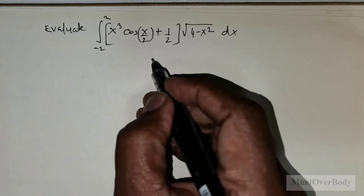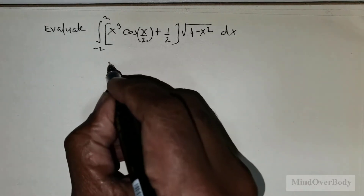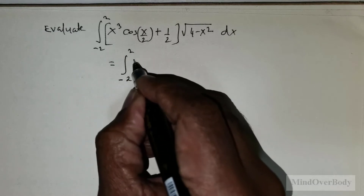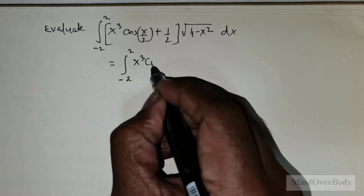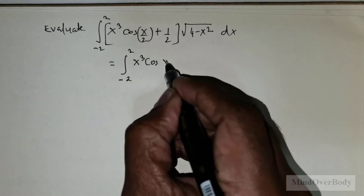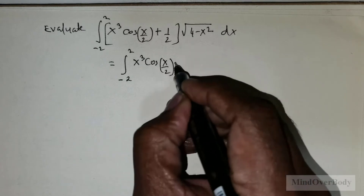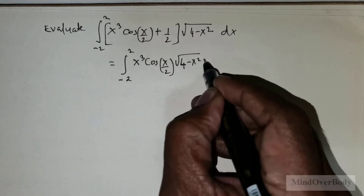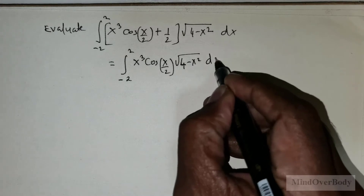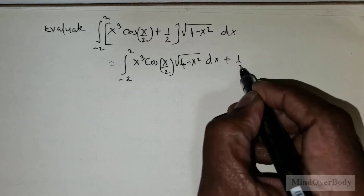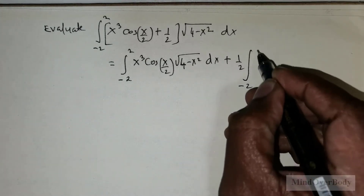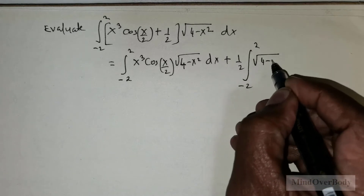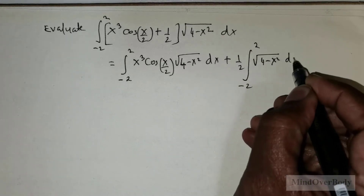To solve this question, what we would do is first rewrite it as: integral from negative 2 to 2 of x³ times cos(x/2) times √(4 - x²) dx, plus 1/2 times the integral from negative 2 to 2 of √(4 - x²) dx.